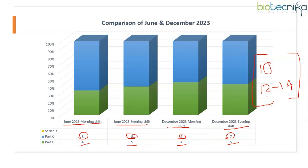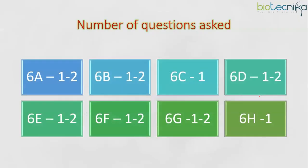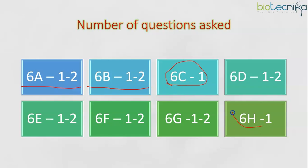Now we have understood the syllabus and how many questions come from this unit. Let's check out from which subunits, how many questions come. From photosynthesis and respiration, one to two questions are always expected. Nitrogen metabolism and stress physiology — as I mentioned — sometimes they ask, sometimes they skip. Even if they ask, maybe just one question.